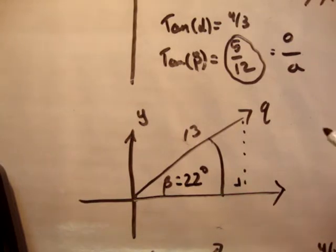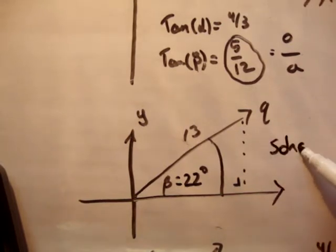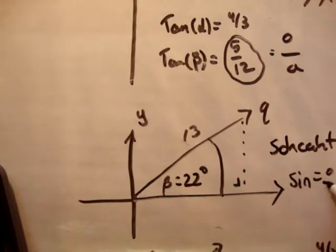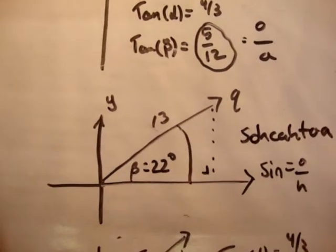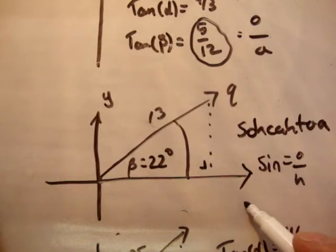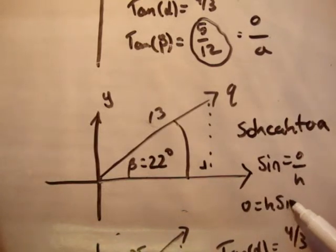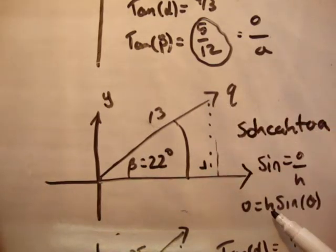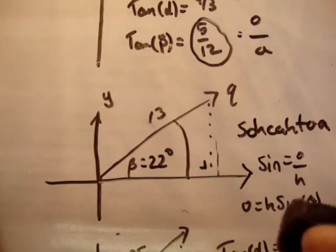Next, we know from SOHCAHTOA that sine is equal to opposite over hypotenuse. Therefore the opposite is equal to h sine whatever the angle is, theta. So in this case, the opposite, which is here, is equal to h, which is 13 times the sine of 22. That should be nothing new to you.